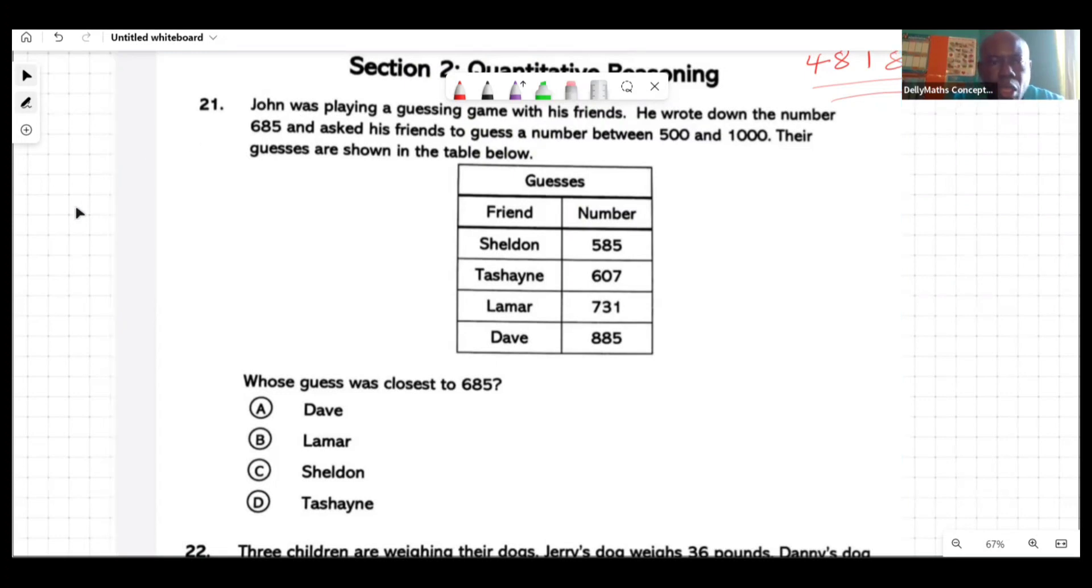You want to subtract all the numbers from this or this from the numbers that are bigger. For example, we could look at Sheldon's. We're talking about 685, subtract 585 from it, and you're looking at about 100. So for this one we're seeing 100, that's the difference. For Tashane, 685, subtract 607 from that, and you're seeing about 78. You want to see which is closest. Tashane is closer than Sheldon to that number.